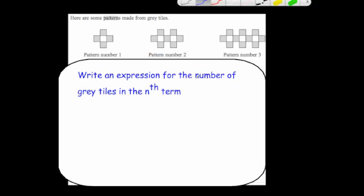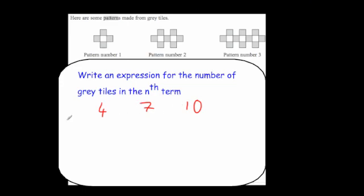It then says write an expression for the number of grey tiles in the nth term — in other words, work out the nth term for the sequence 4, 7, 10. The sequence goes up by 3 each time, so let's write the 3 times table: 3, 6, 9 — that's 3n. To get from 3 to 4 you add 1, from 6 to 7 you add 1. So the nth term is 3n + 1.